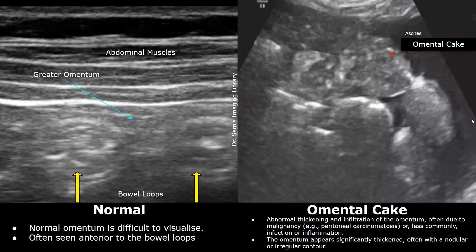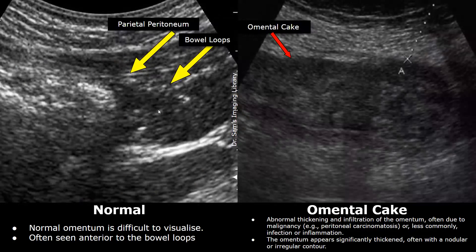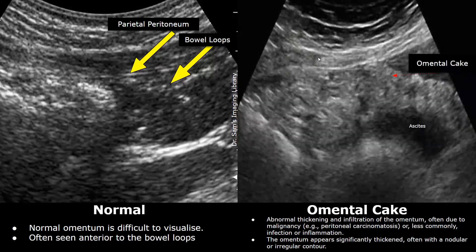Basically, in normal cases, we will not see any heterogeneous and large prominent structure in the abdomen, usually anterior to the bowel. This image also shows an abnormally thickened omentum, with no ascitic fluid present in this case. In this case, the omentum appears hyperechoic, heterogeneous, and has irregular margins.